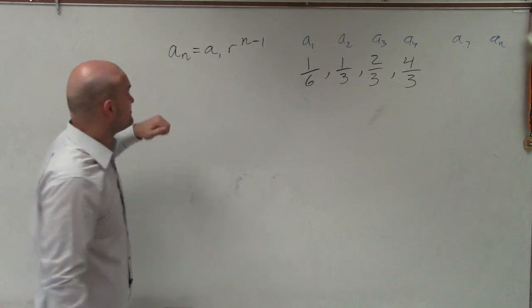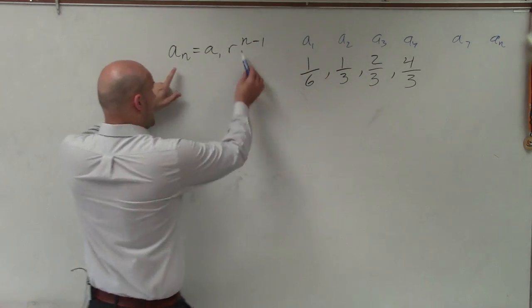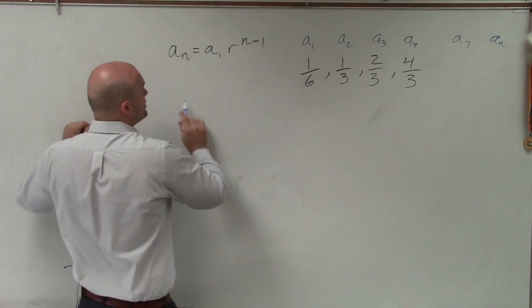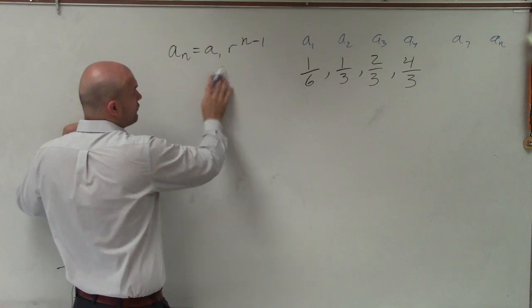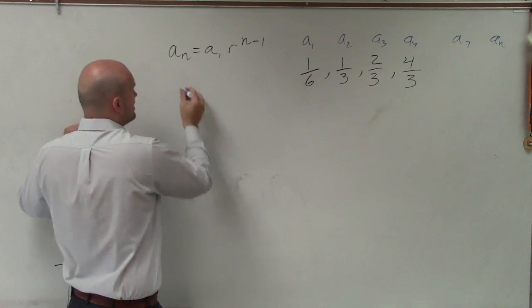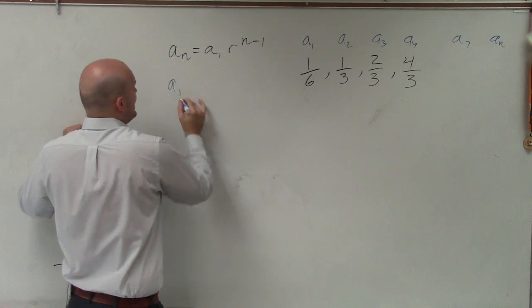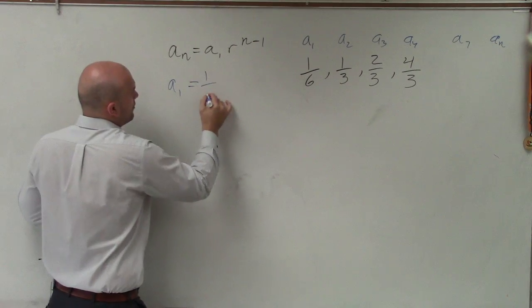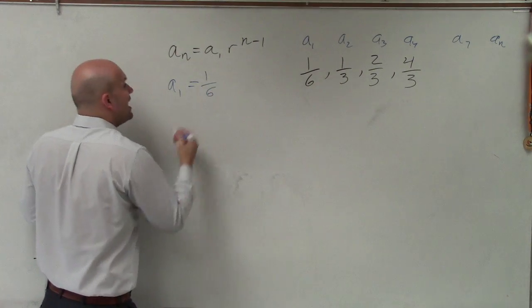So n is going to be our variable, but what we want to do is determine what a sub 1 is and what r is. A sub 1 is going to be your first term in your sequence, so that's going to be 1 sixth.